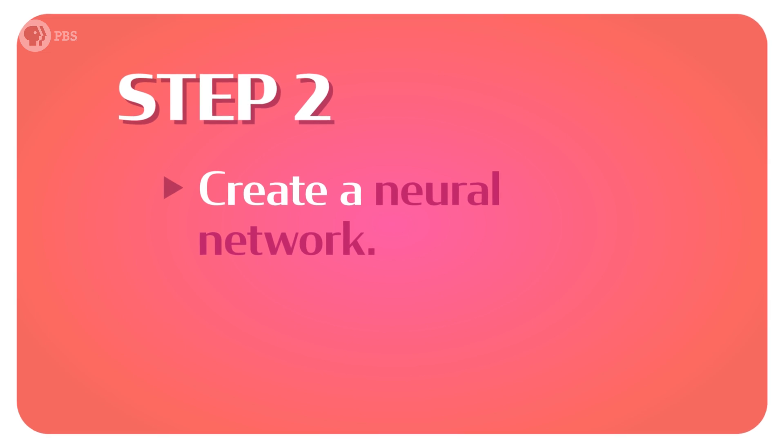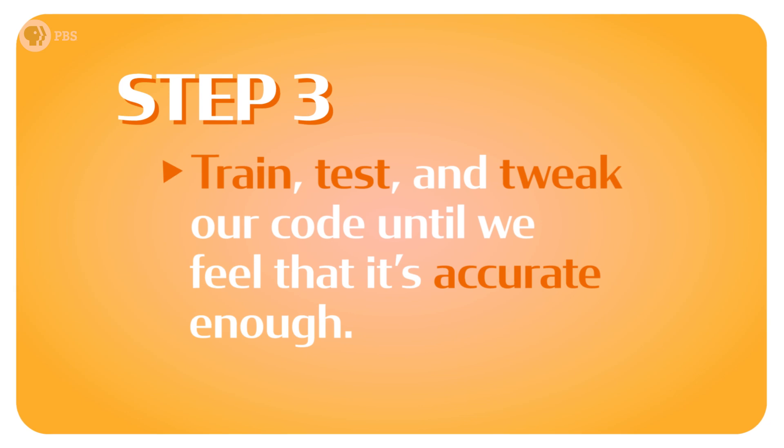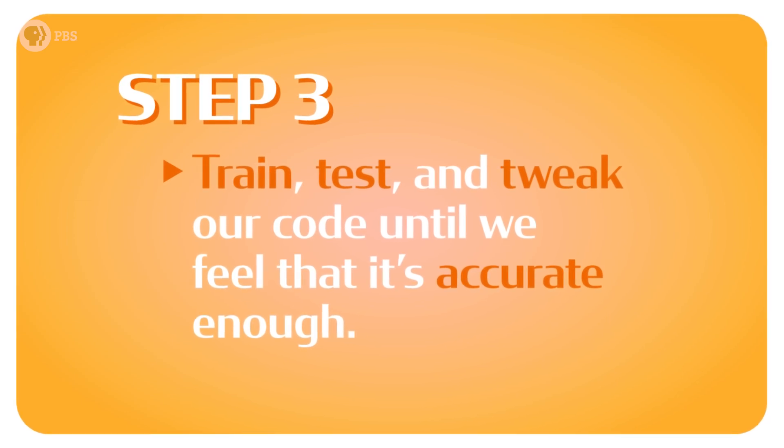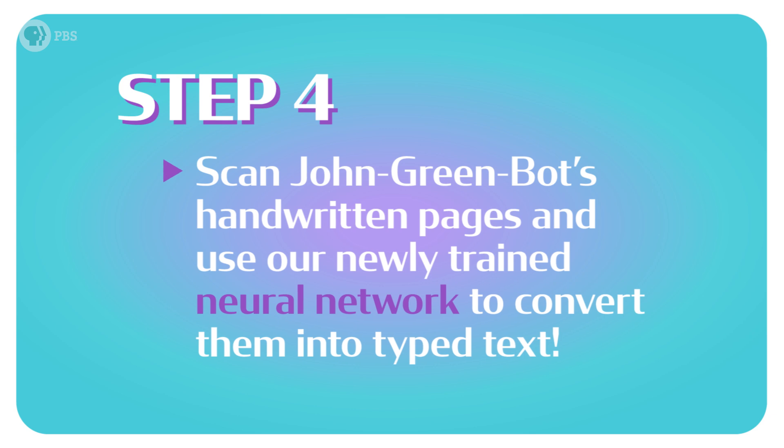Next is step two, create a neural network. We'll actually need to configure an AI with an input layer, some number of hidden layers, and the ability to output a number corresponding to its letter prediction. In step three, we'll train, test, and tweak our code until we feel that it's accurate enough. And finally, in step four, we'll scan John Greenbot's handwritten pages and use our newly trained neural network to convert them into typed text. Alright, let's get started.